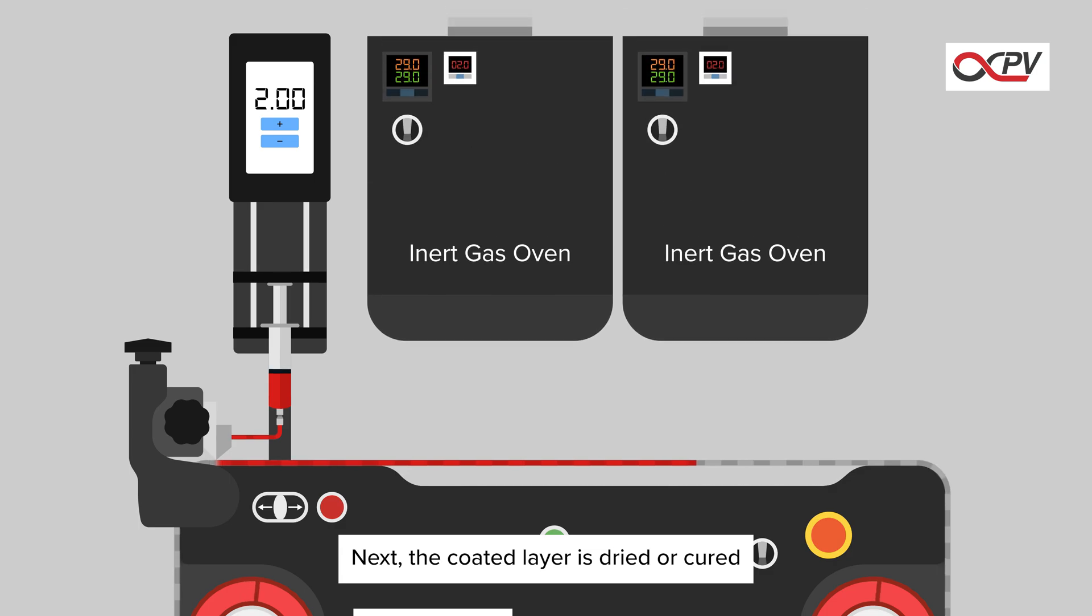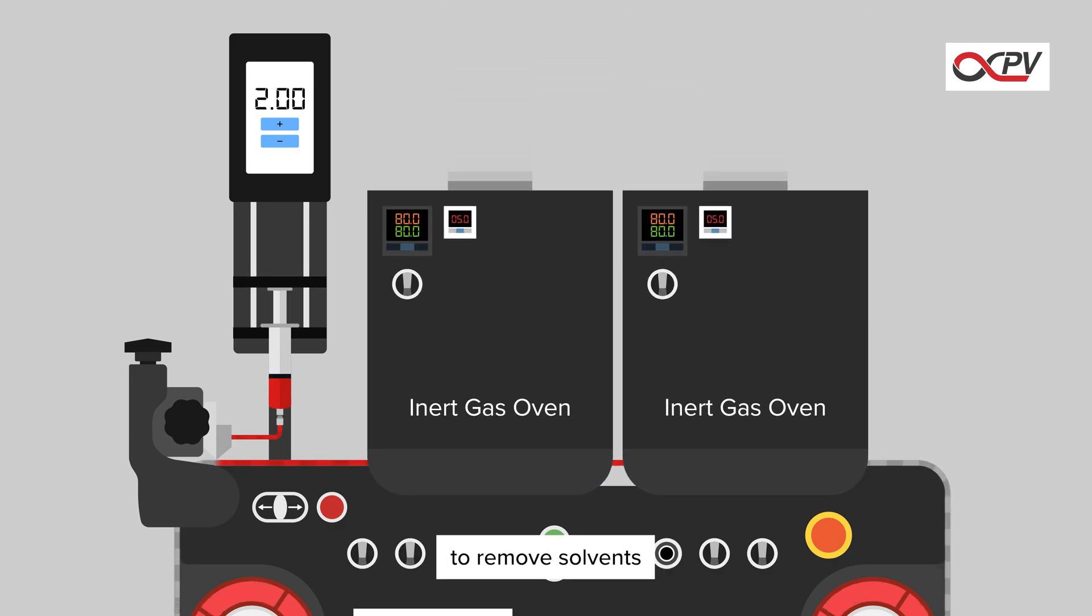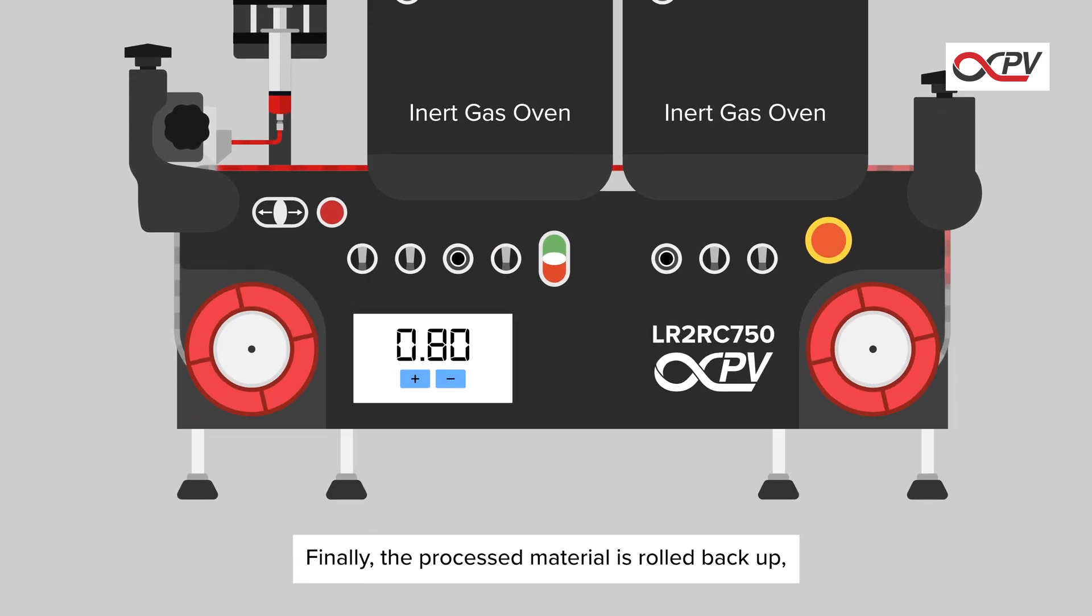Next, the coated layer is dried or cured to remove solvents or fix the material in place. Finally, the processed material is rolled back up, ready for use or further production.